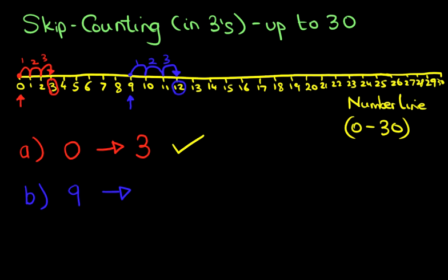It is 12. So the number after 9 if we are counting in threes is 12. That is correct.